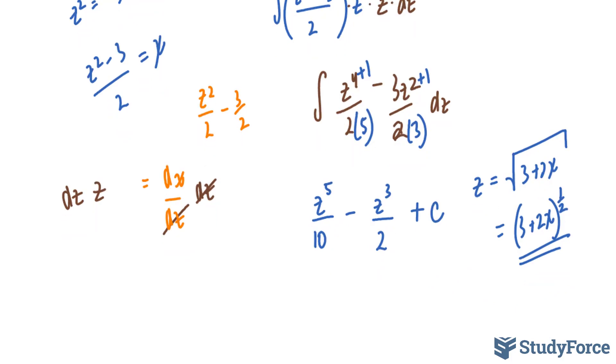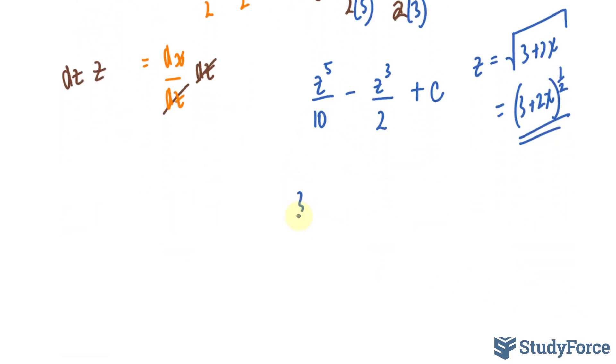And if you do that, you should end up with (3 plus 2x) to the power of half to the power of 5, over 10, minus (3 plus 2x) to the power of half to the power of 3 over 2, plus c. I'll use the power raised to a power rule soon for the laws of exponents to simplify this.